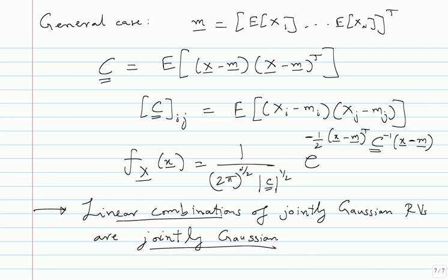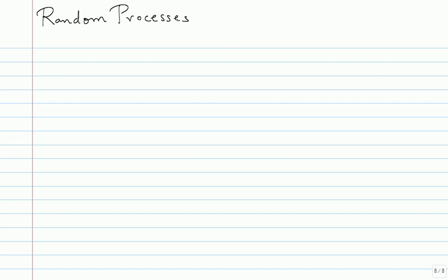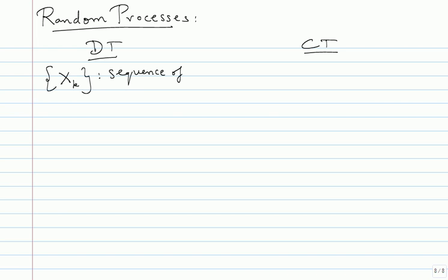The last topic is random processes. We will distinguish between random processes in discrete time and in continuous time, doing both simultaneously. A discrete time random process is a sequence of random variables, denoted x of k — for each k you have a random variable. When I say discrete time, time is discrete: only x1, x2, and so on. A continuous time random process is denoted x of t — for each t, x of t is a random variable.